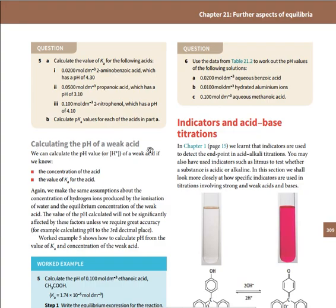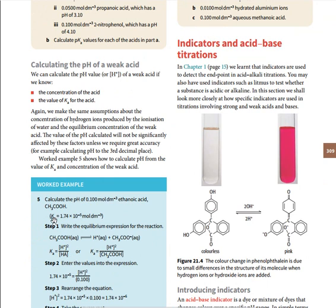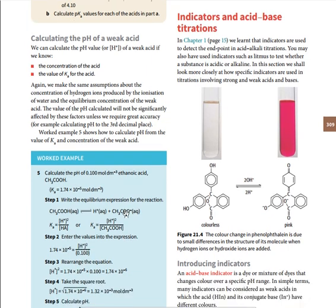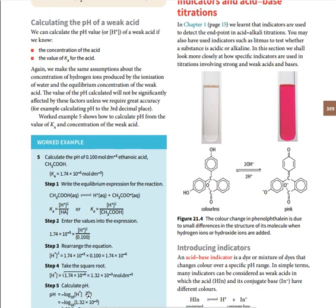Now, calculating the pH of a weak acid: take an example — calculate the pH of 0.1 mol dm⁻³ ethanoic acid. The Ka of ethanoic acid is given. Use the formula Ka = [H⁺]² / [HA], then calculate [H⁺] = √(Ka × [HA]). When you have [H⁺], calculate pH using pH = −log[H⁺].